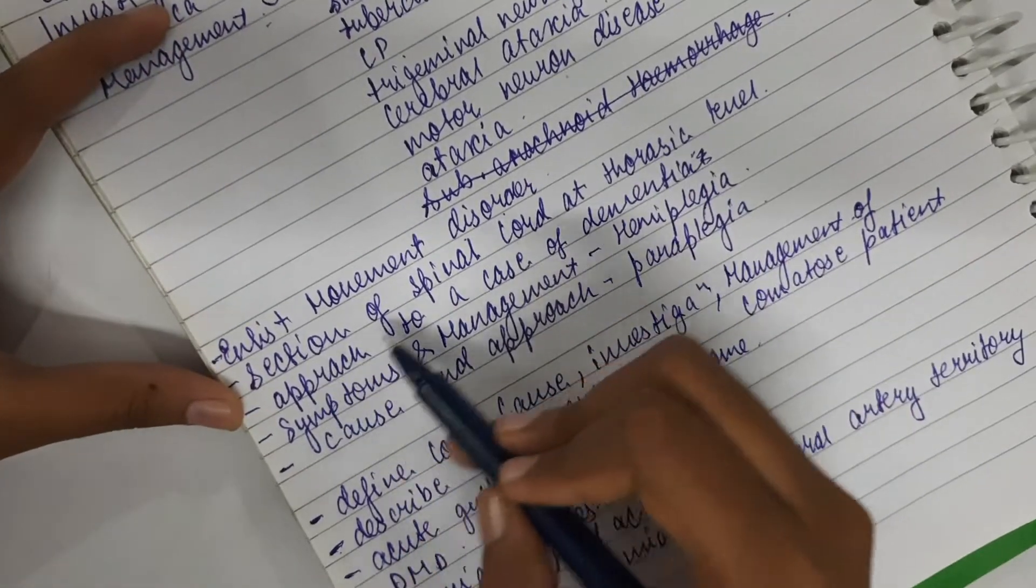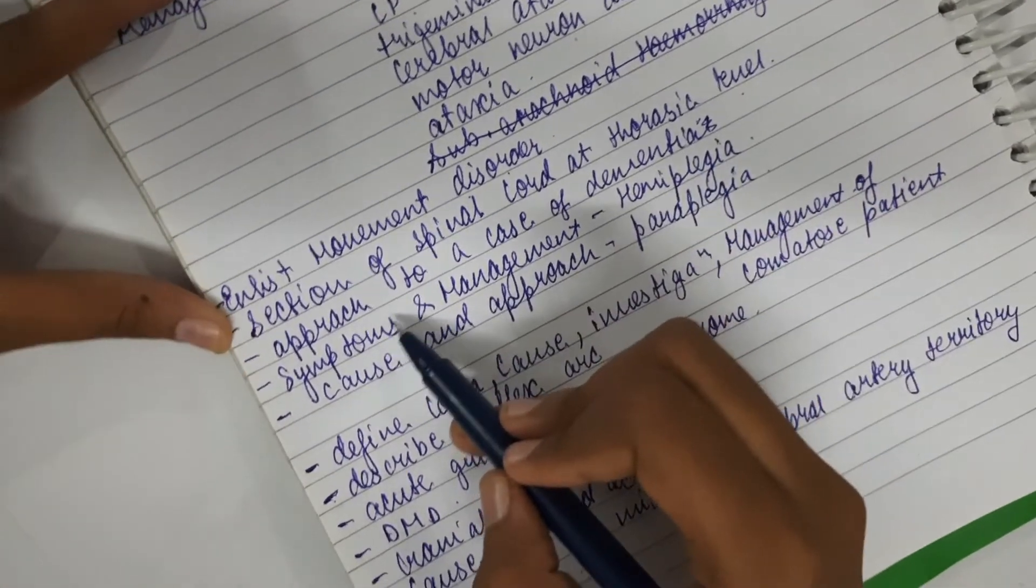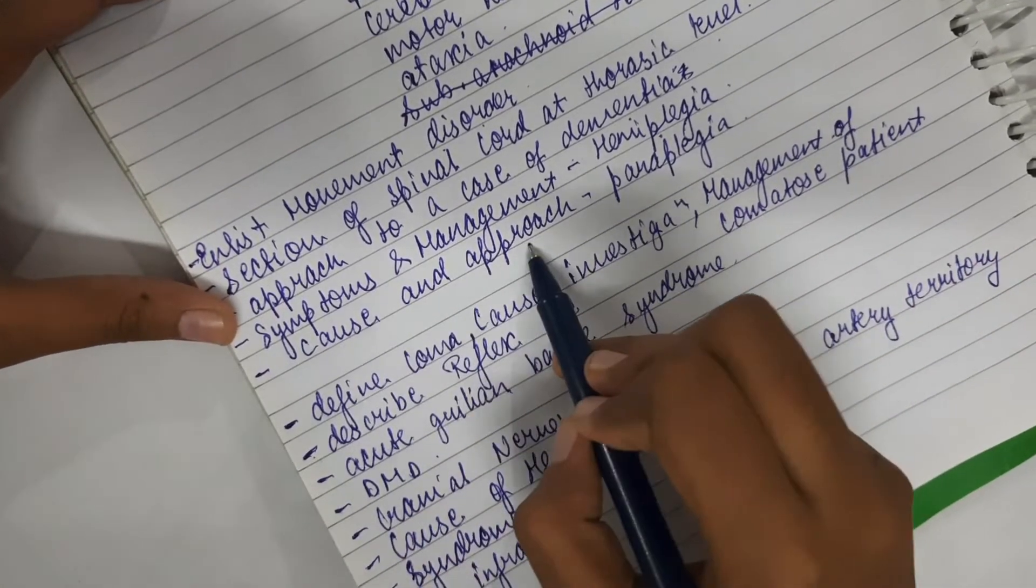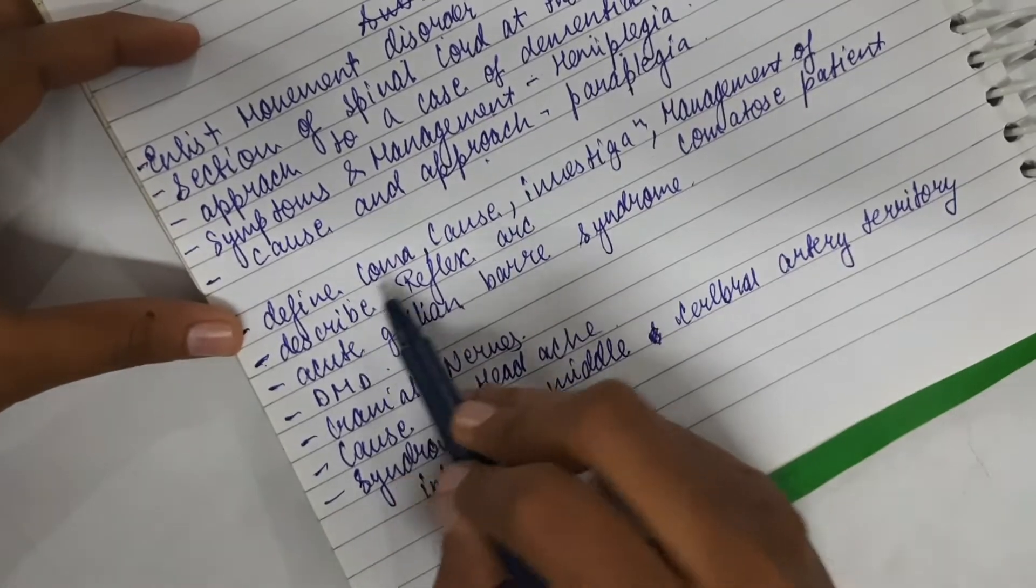Then endless movement disorder, lesion of spinal cord at thoracic level, approach to a case of dementia, symptoms and management of hemiplegia, cause and approach of paraplegia.